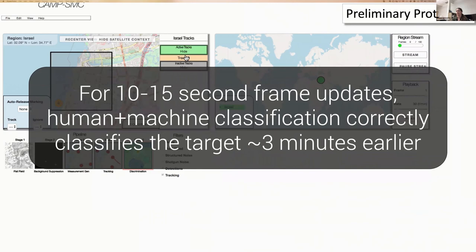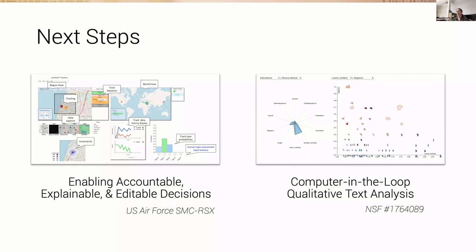We're just getting started on phase two with real users. That leads us into our next steps where we're iterating on this basic idea of how do we couple human and machine learning in remote sensing applications to enable accountable, explainable and editable decisions. We're also exploring this in the context of qualitative analysis. Can we model the rich expert intuitions that emerge when somebody is qualitatively analyzing a text corpus and have that machine learning algorithm act as the collaborator to scale up and direct their limited attention to larger data corpora.